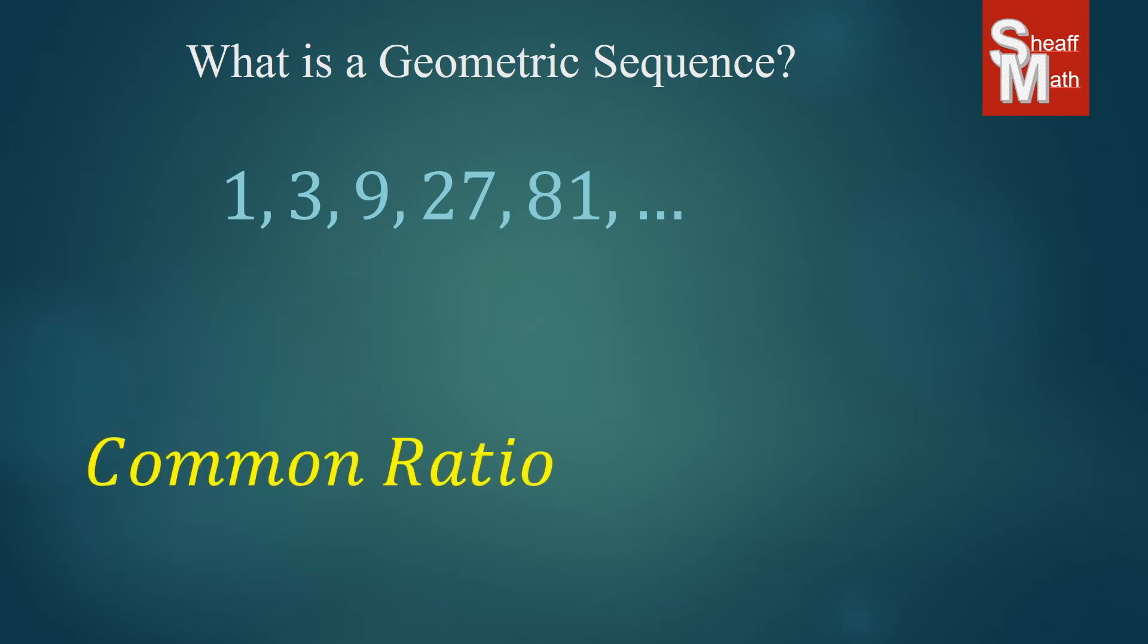So to find that common ratio, we take our number and we divide it by the one before it. So 3 divided by 1, 9 over 3, 27 over 9, and 81 over 27. And those all come out to 3. They have that common ratio. And that's the number again that you multiply to get to the next number.